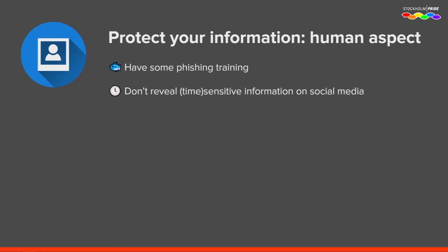The next aspect — which is really a privacy issue but still important — is to not reveal time-sensitive information on social media. If you want to hide your movements, don't post them. And if you want to inform people about something your group or organization has done, sometimes it's good to do that after a while, to reduce the possibility of you and your peers being associated with a certain event.